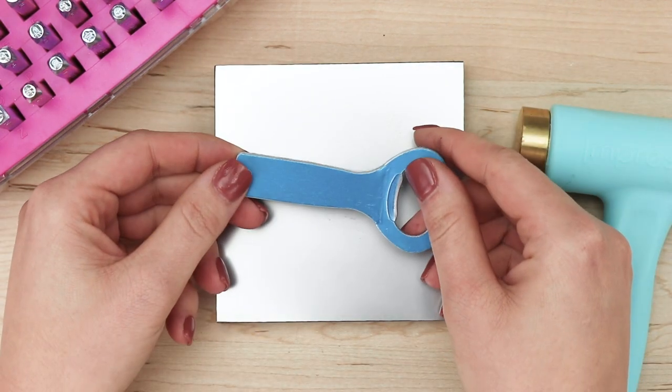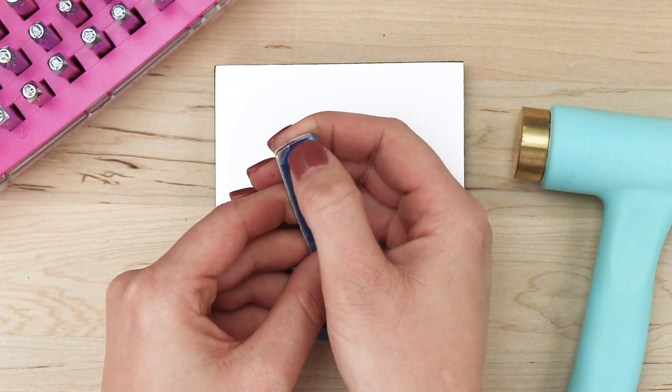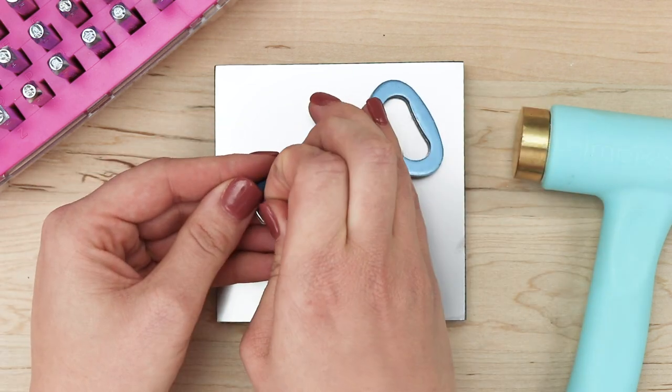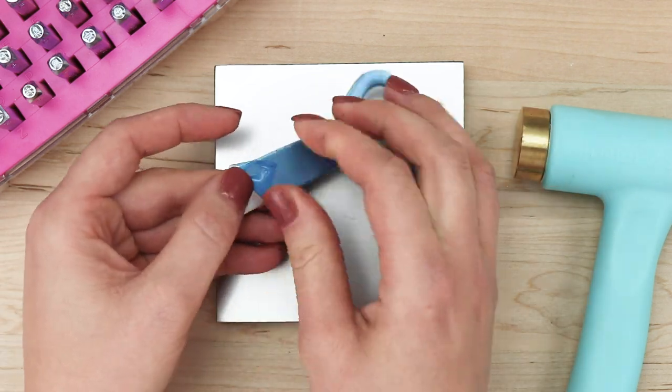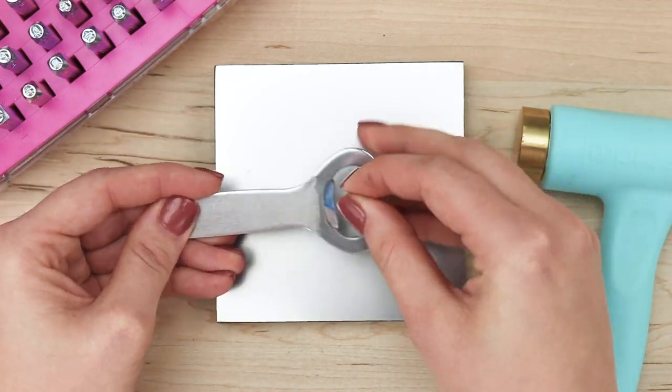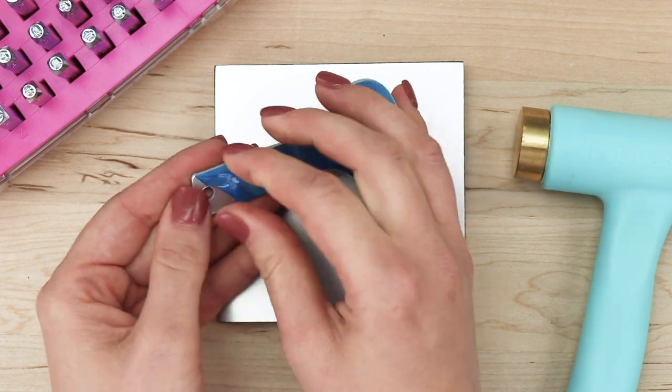Then take your bottle opener and remove the blue film from both sides by scratching the edge with your finger until the film lifts up. Then pull in the opposite direction until the blue film is removed. This blue film protects your metal from scratches while it's in the packaging.